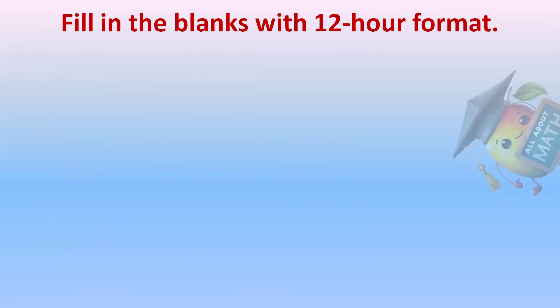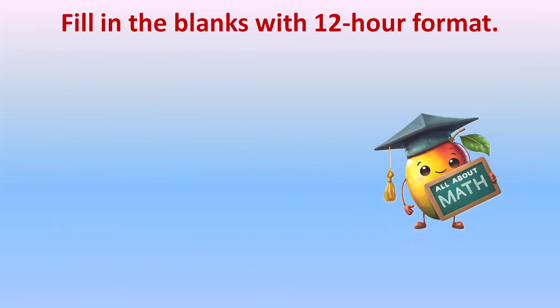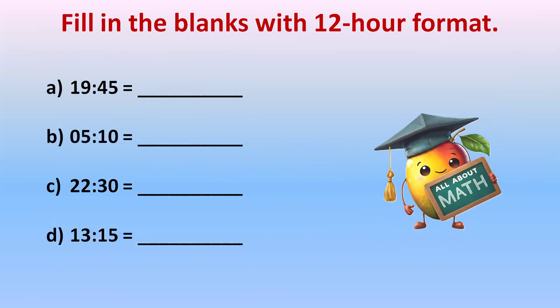This exercise is for you to solve. So part A we have 19:45, 05:10, 22:30, and 13:15. For that you just need to check the hours. If it is more than 12 subtract 12 and write P.M. If it is less than 12 you will write the number as it is with A.M. Now do this exercise.